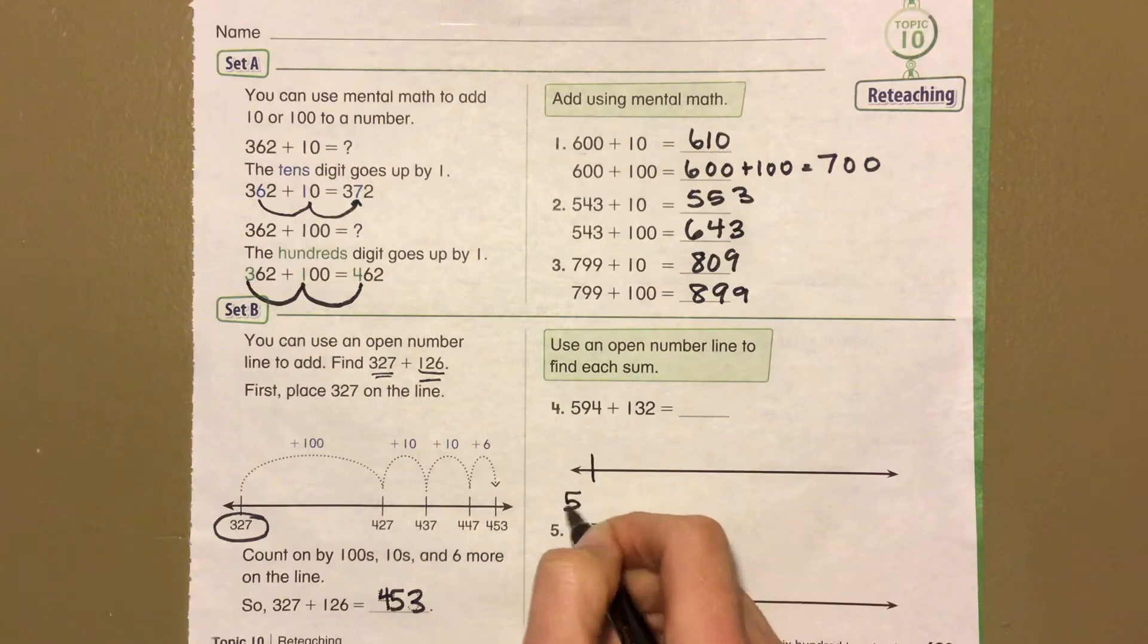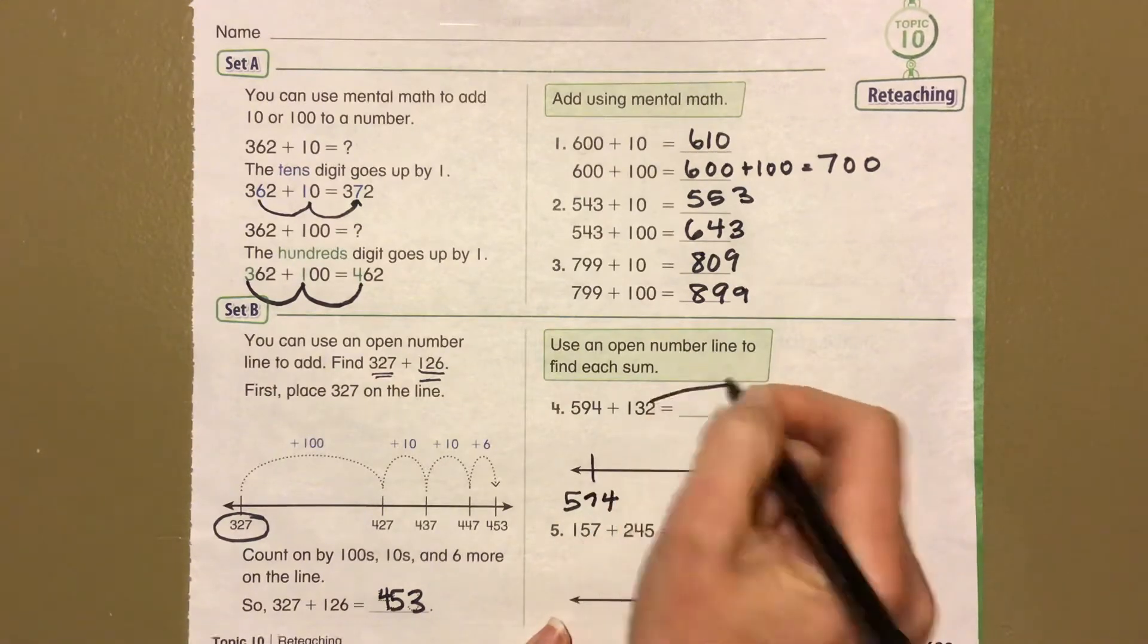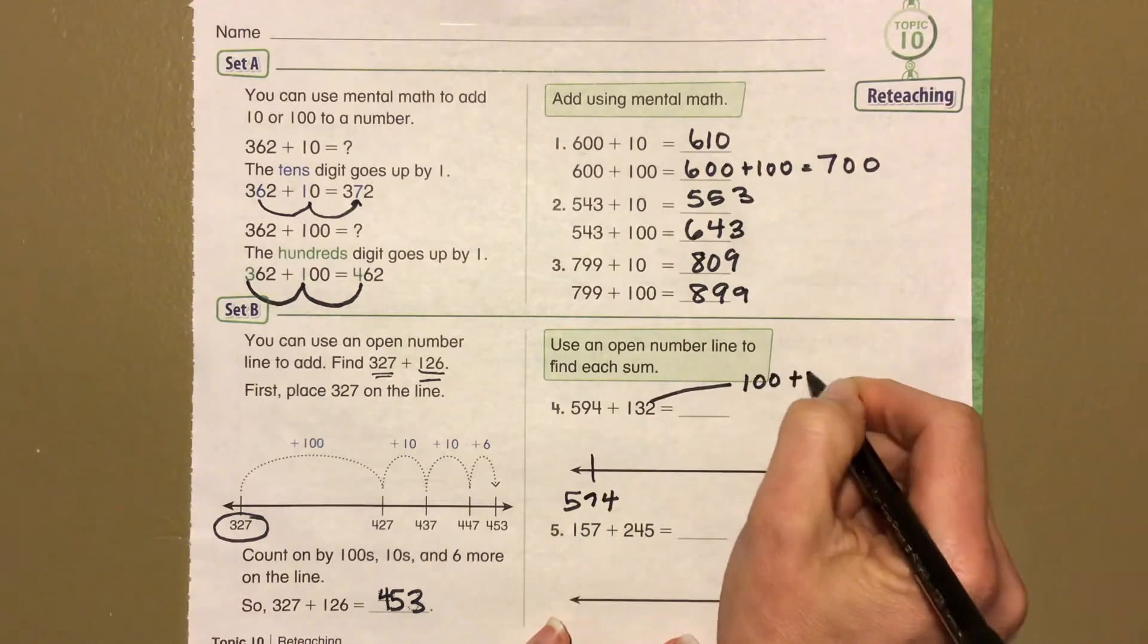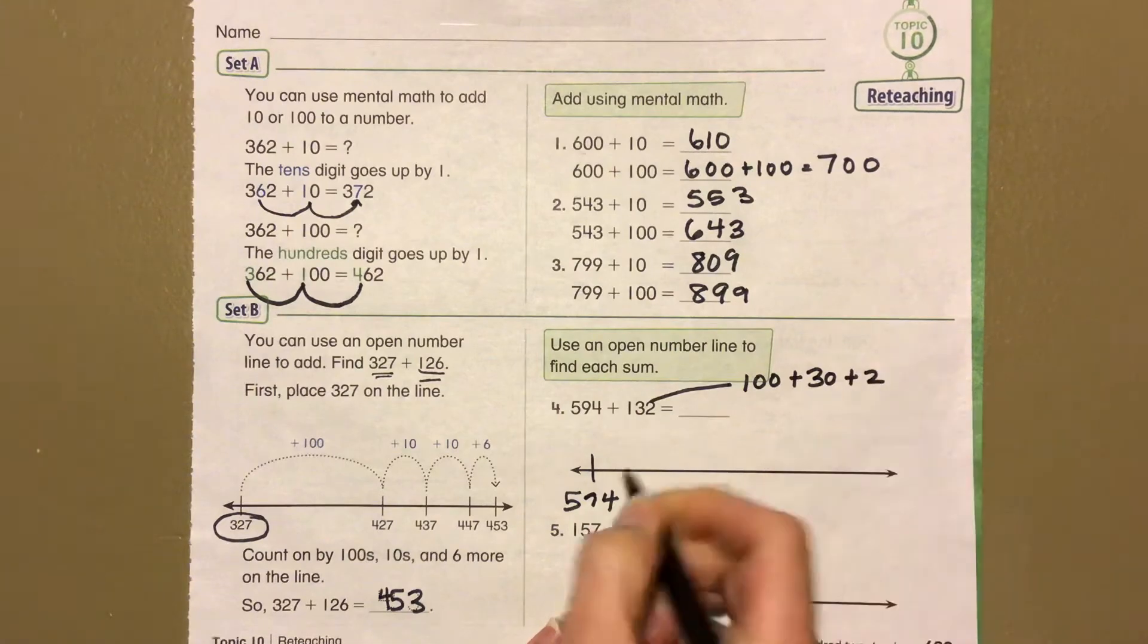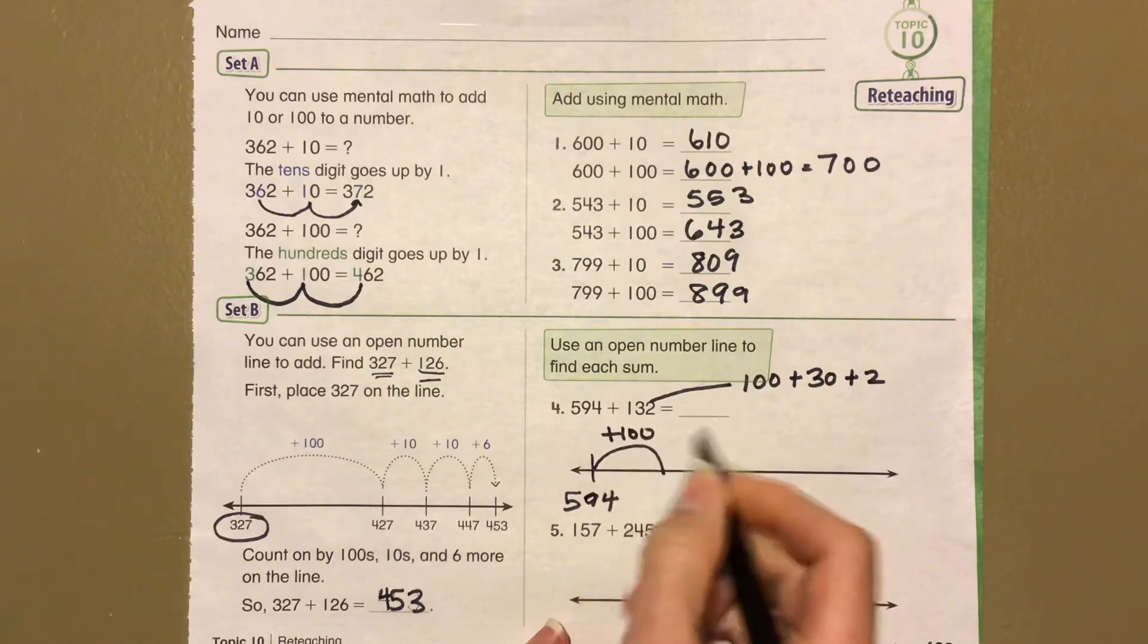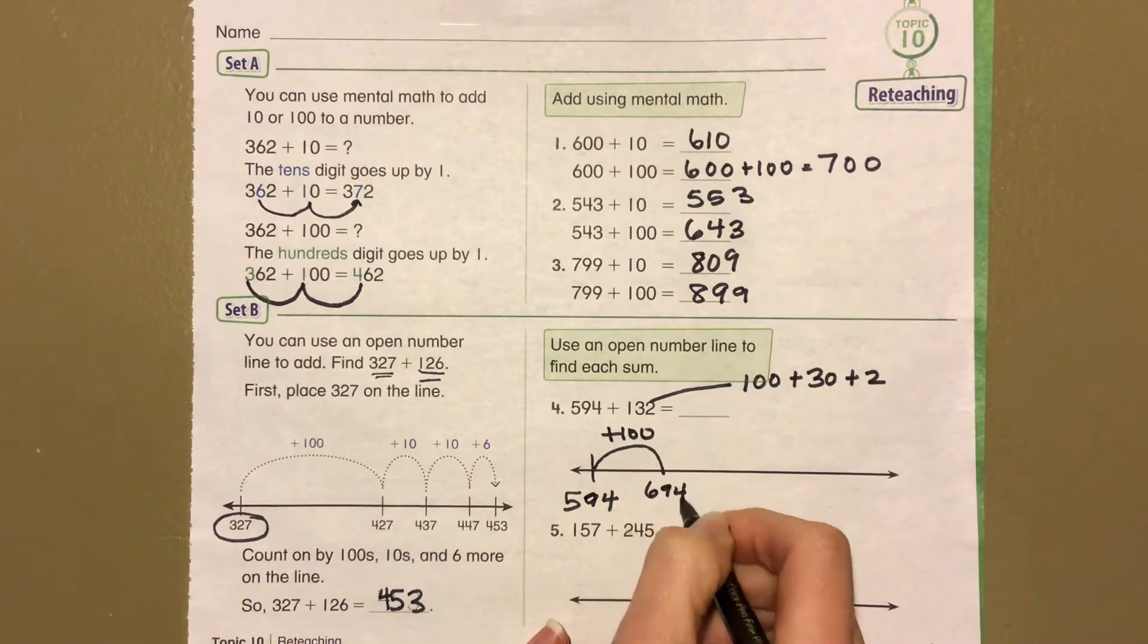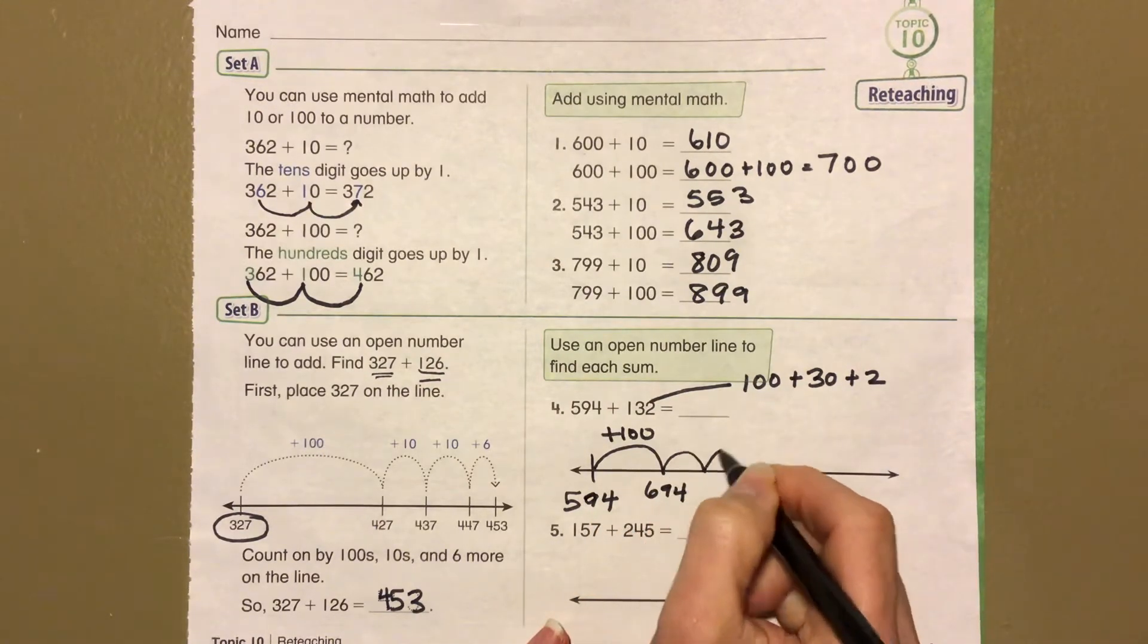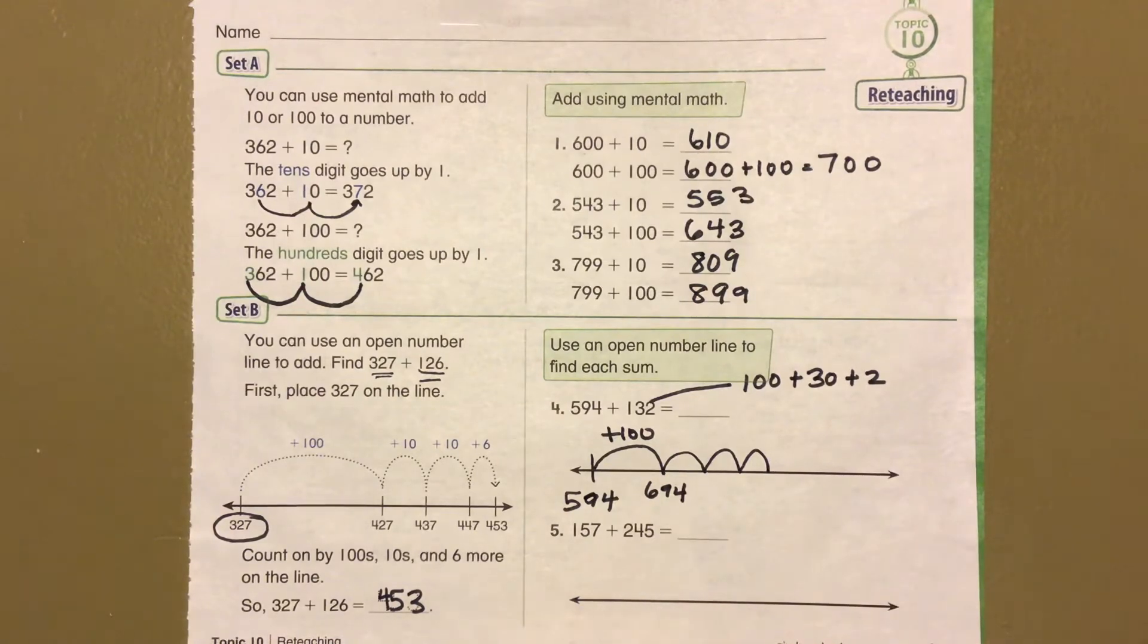Okay, we're going to start at 594 and I'm going to make this 100 plus 30 plus 2. So first I'm going to do 594 plus 100 is 694 plus 30. 10, 20, 30.